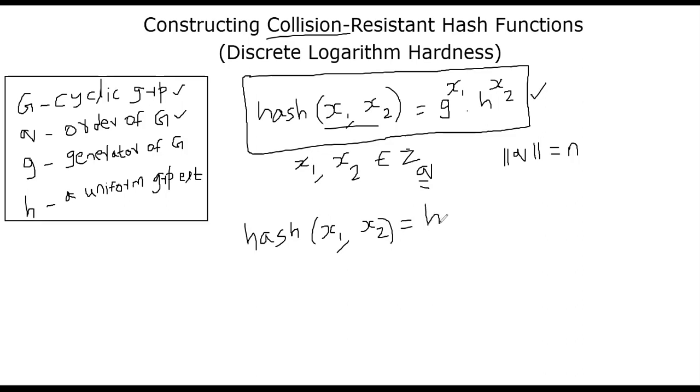Well, that means you can go and apply the formula of how hash is defined. Now you can easily see for yourself that you can just rewrite this as g power x1 h power x2 is equal to g power y1 h power y2, right?